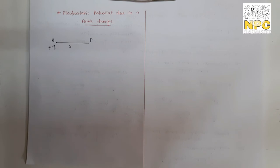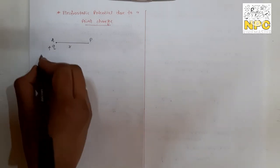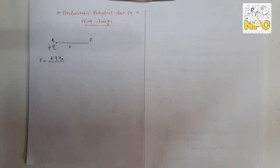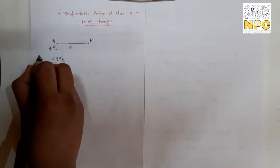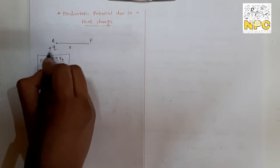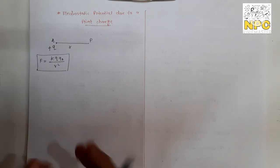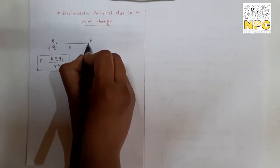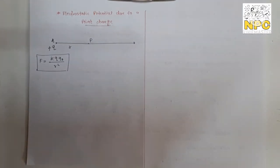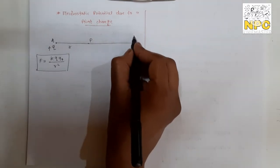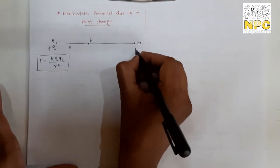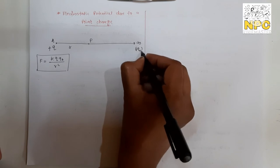The force between the two charges is: F = kqQ₀/r². If point A has a positive charge and point P also has a positive test charge, the electrostatic force between them is repulsive. Since infinity can be placed anywhere, we take infinity in the straight radial direction from point P, and place the positive Q₀ charge at infinity.